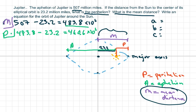That's your P. We know that a, the length from here to here, is 483.8 times 10 to the 6, or millions. Since a is this and we know c is your focus, c is right here, 23.2 million miles, all we have to do is find our b.